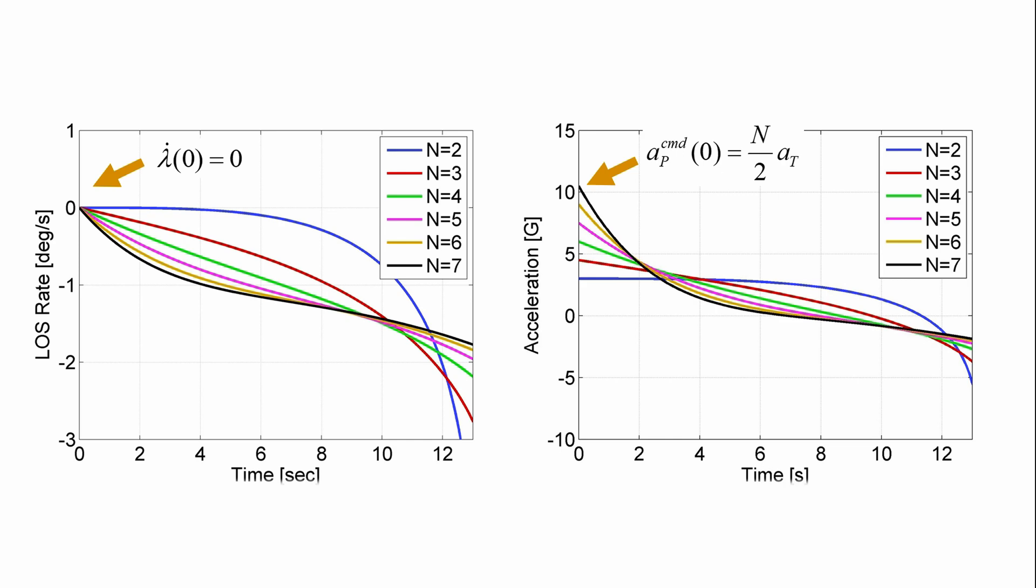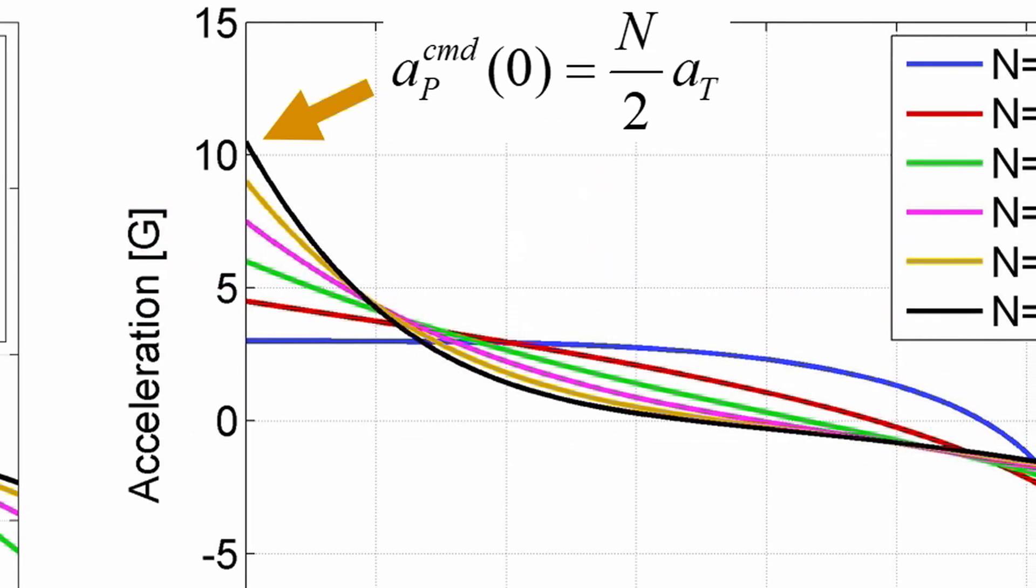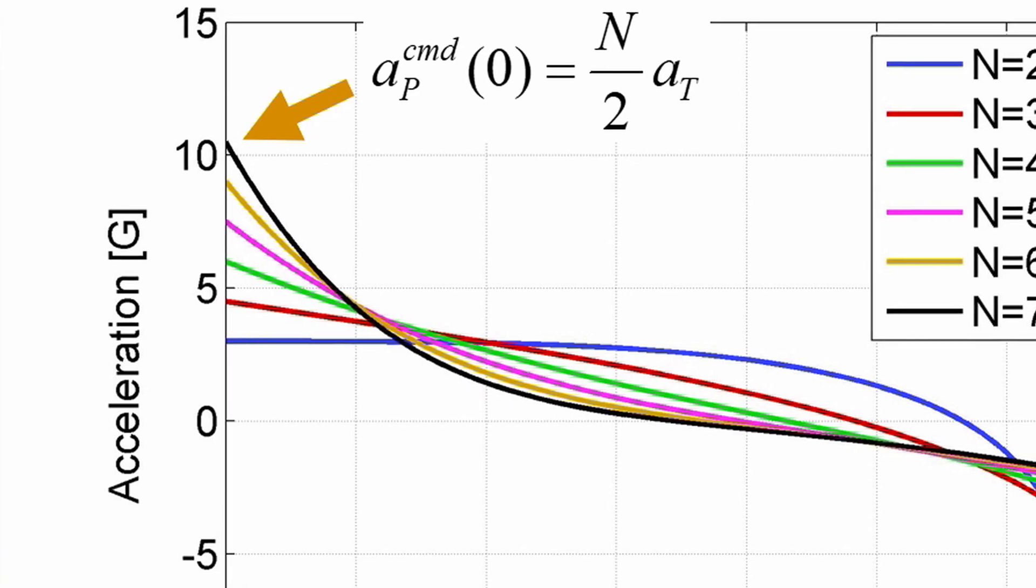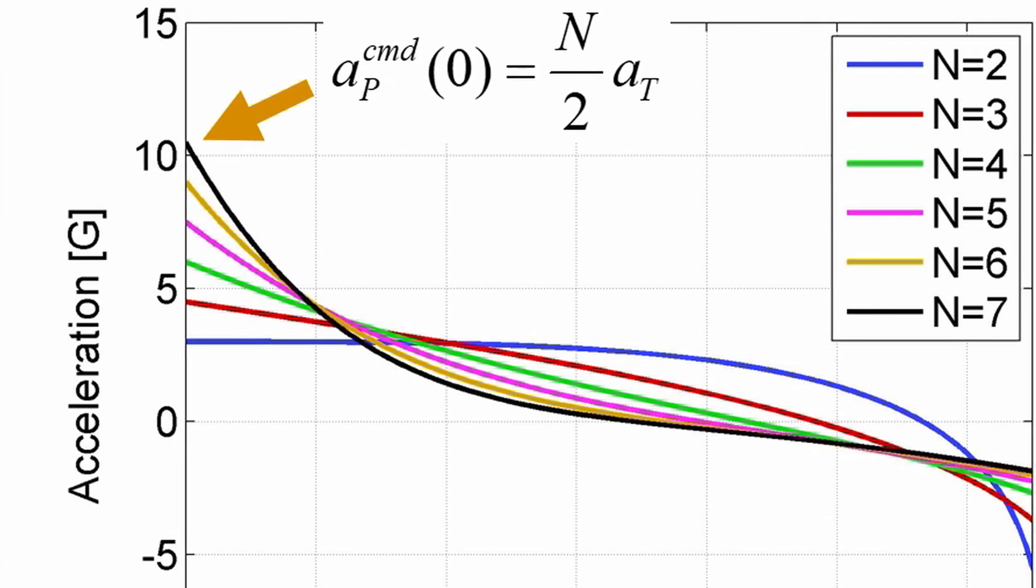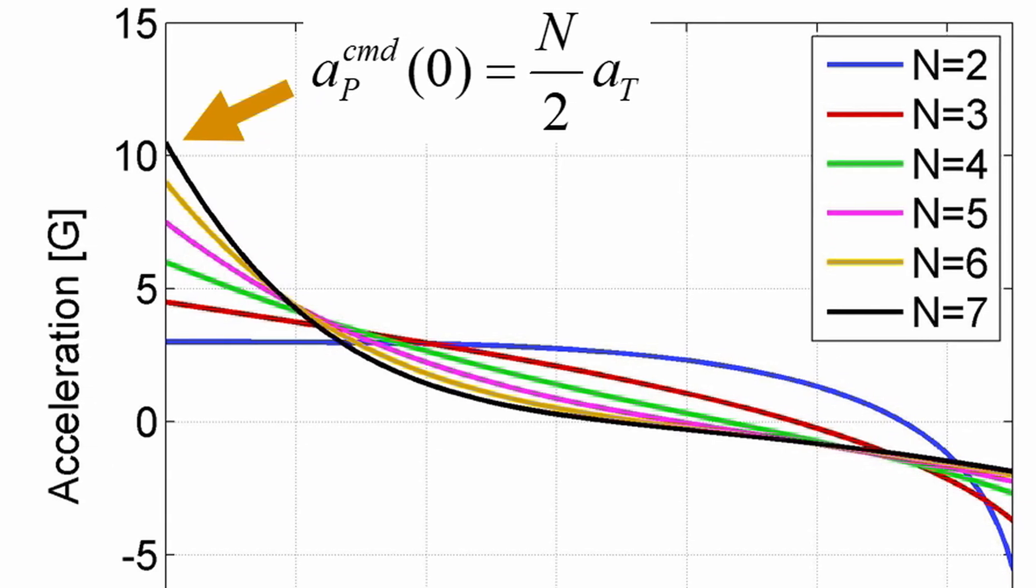This pays a dividend later on. Notice the smaller line of sight rate as time increases. And despite the fact that the augmentation term is larger due to larger n, notice that in the acceleration plot, for increasing n, the magnitude of the acceleration required decreases as n increases.